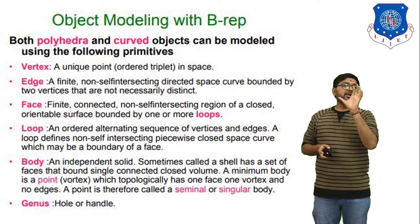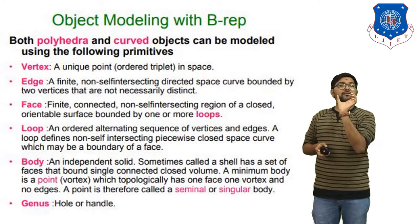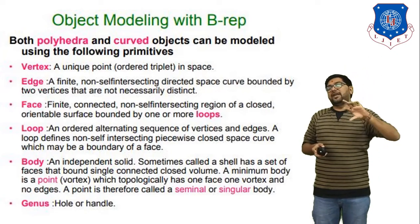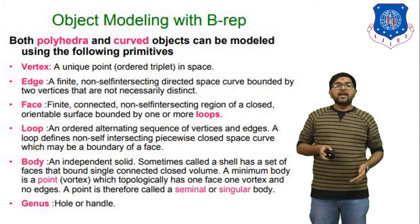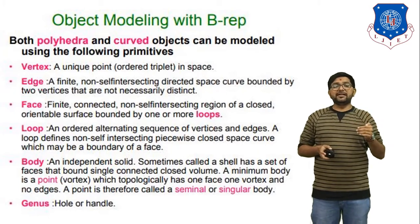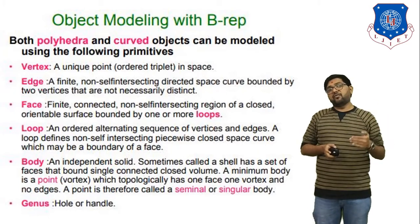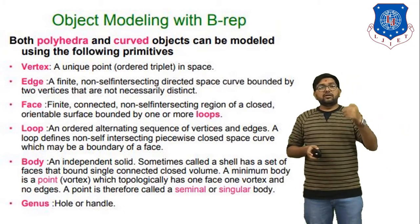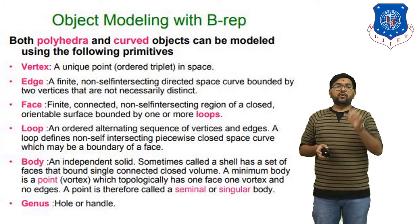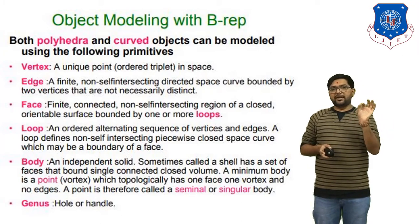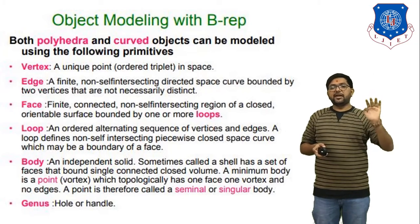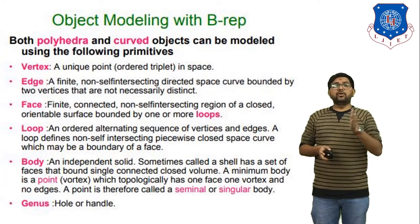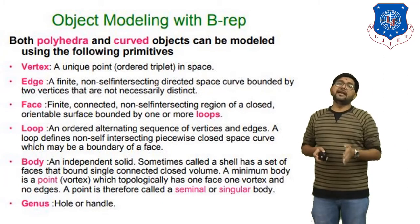Next is the body. The cube is considered as one body. If you generate a cylinder inside the cube, that is considered a second body. Next is genus, which means hole. If you generate a number of holes in the cube, each hole is considered a genus. So to understand boundary representation, we first need to understand vertex, edge, face, body, and genus. Using the Euler equation, we then validate whether any solid model is valid or not.